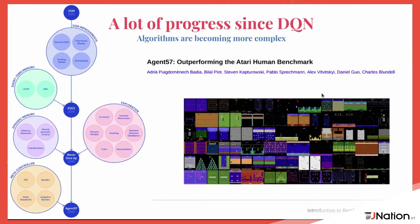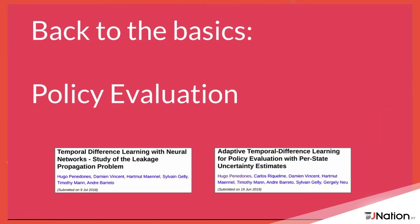Since then, a lot of progress has happened. Just last month there was a paper called Agent 57, in the lineage of DQN, which already includes literally dozens of techniques: beyond experience replay and target networks, now it has prioritized experience replay, distributed RL, things for long-term and short-term memory like LSTMs, episodic memory, and a lot of things on how to do exploration properly. In RL you need to get the balance between exploration and exploitation right. There are also things labeled under MetaController. However, what I want to do for the rest of my talk is actually come back to the basics — and that was my research in the last couple of years.